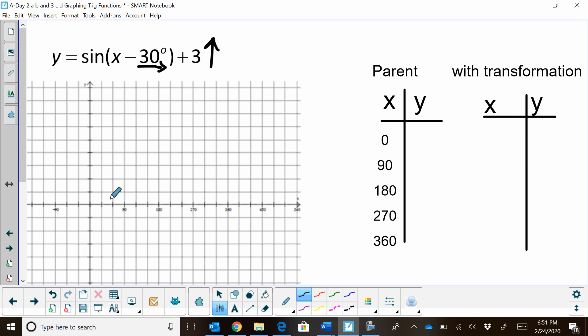We know the parent graph of sine has a value that starts at the origin, so it's going to start at 0, 0, and you can evaluate that using y equals sine of x. So sine of 90 degrees is positive 1, sine of 180 degrees is 0, sine of 270 degrees is negative 1, and sine of 360 is 0.